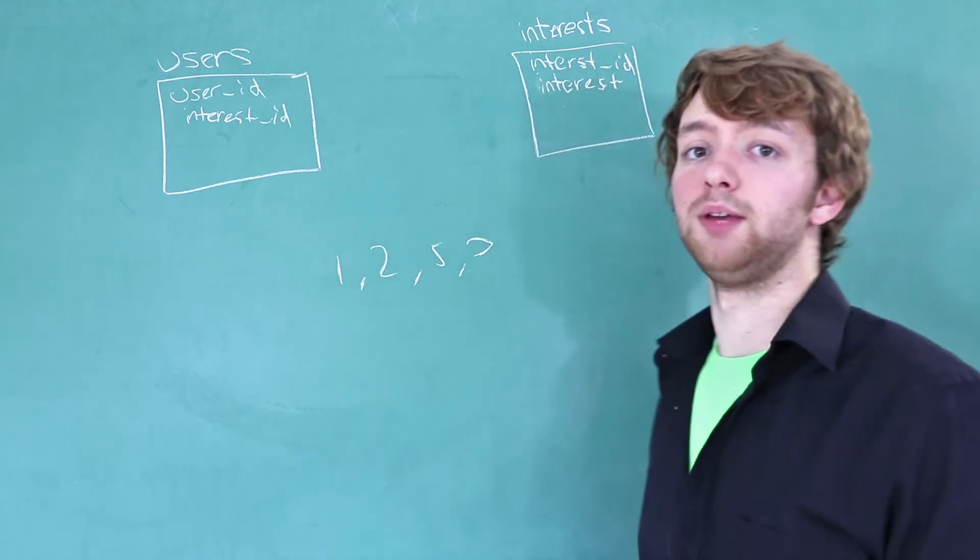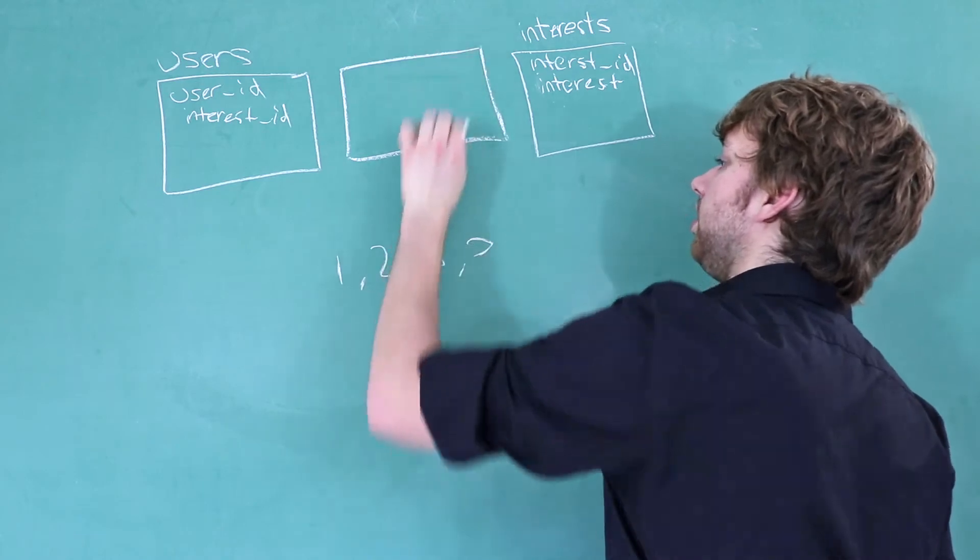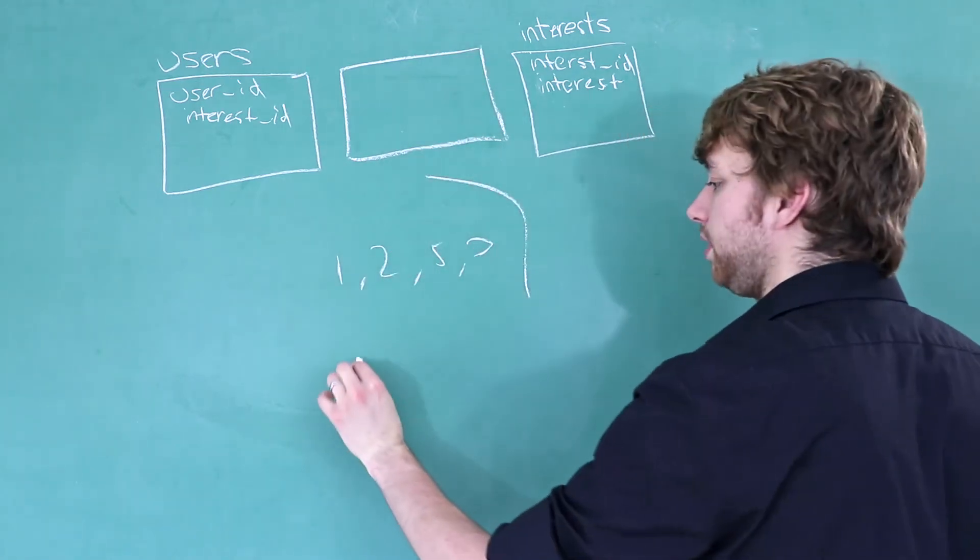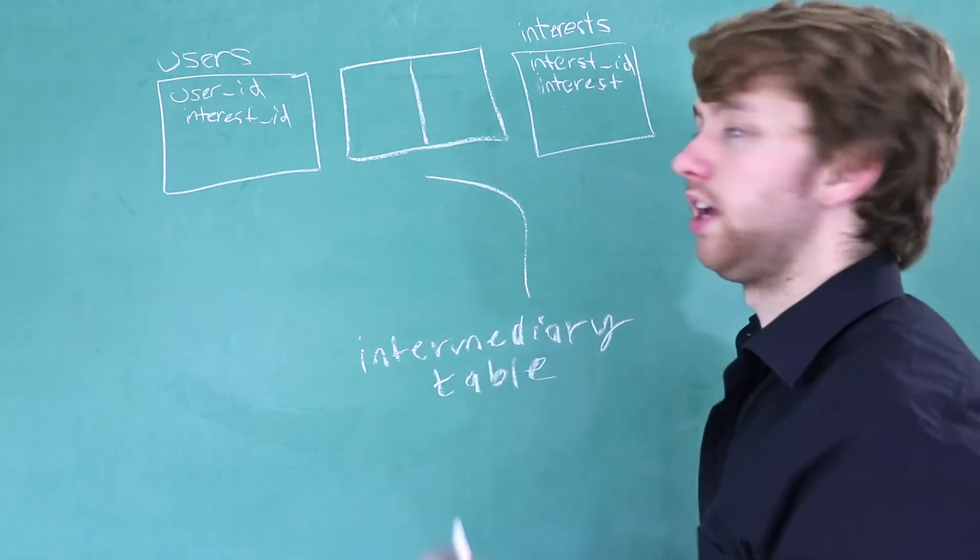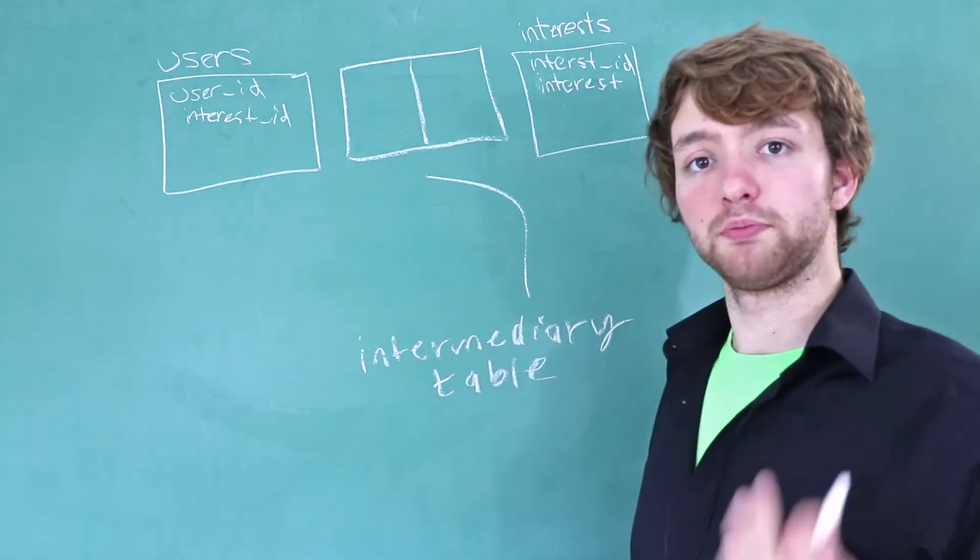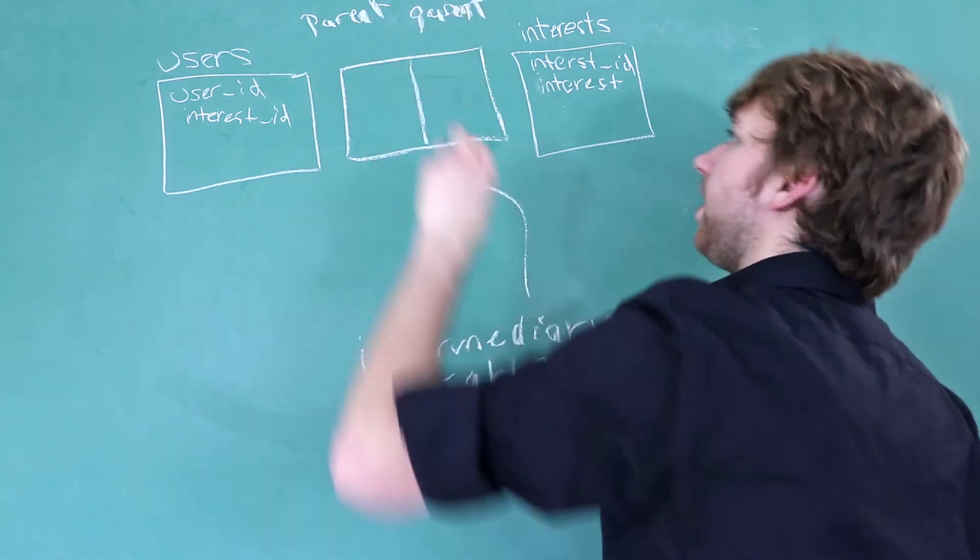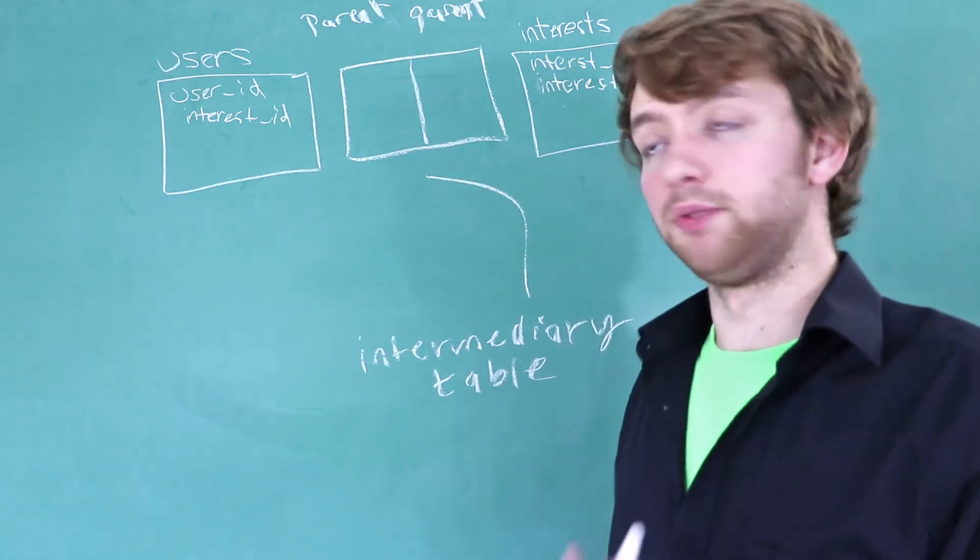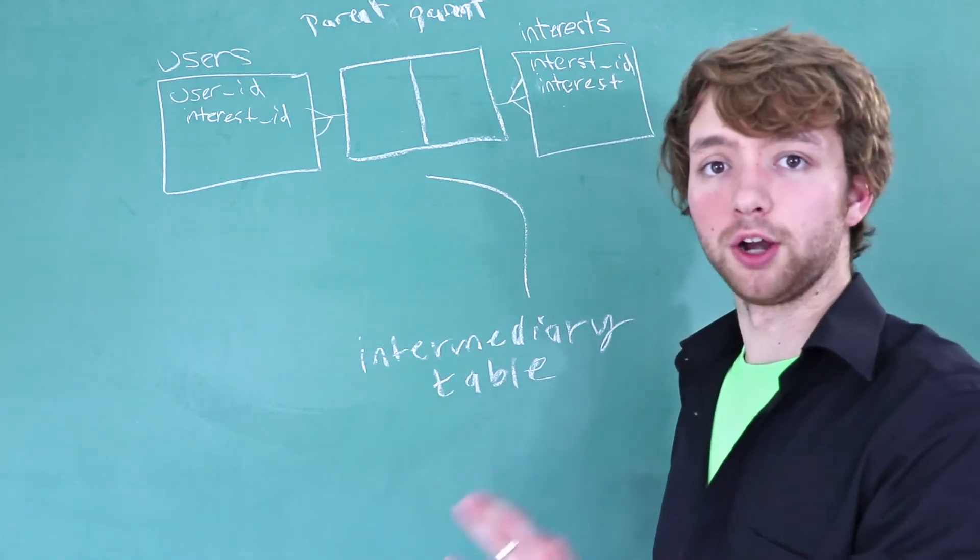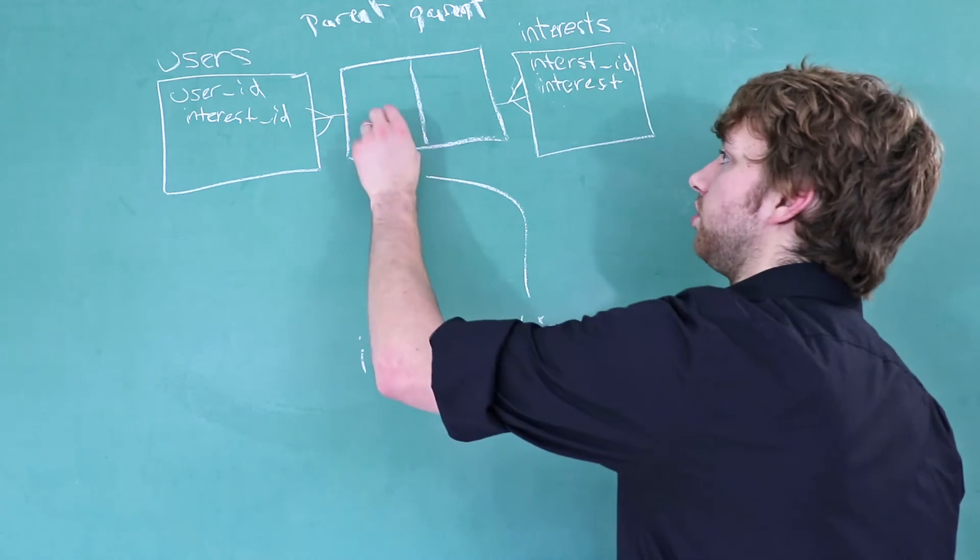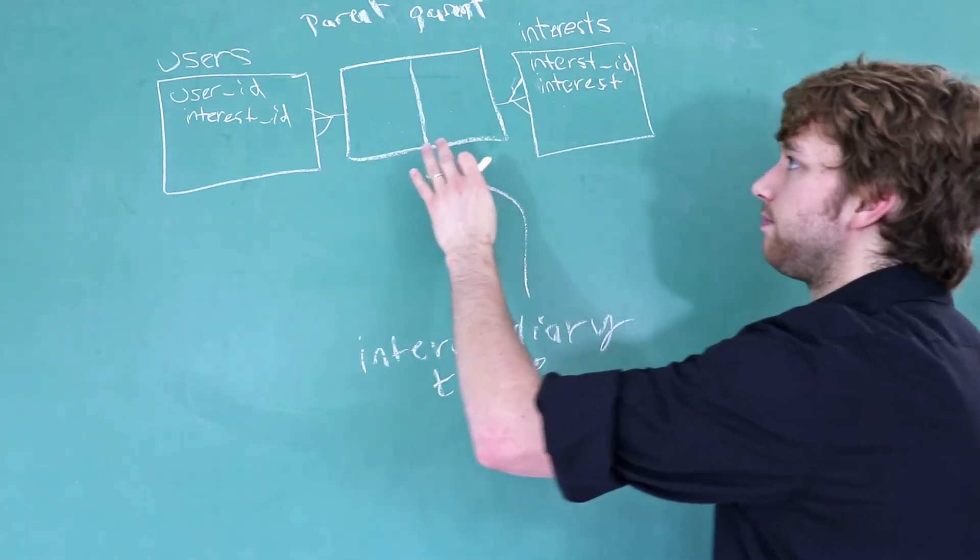So how do we get around this problem? Well this is where the third table comes in. We're actually going to make a table that goes in between these two, and this is known as the intermediary table. This is going to have at least two columns, and these columns are going to represent the parent. So we have two parents here, and that is going to be the one side of a one-to-many relationship. This is what I meant earlier when I said there's going to be a shared table.